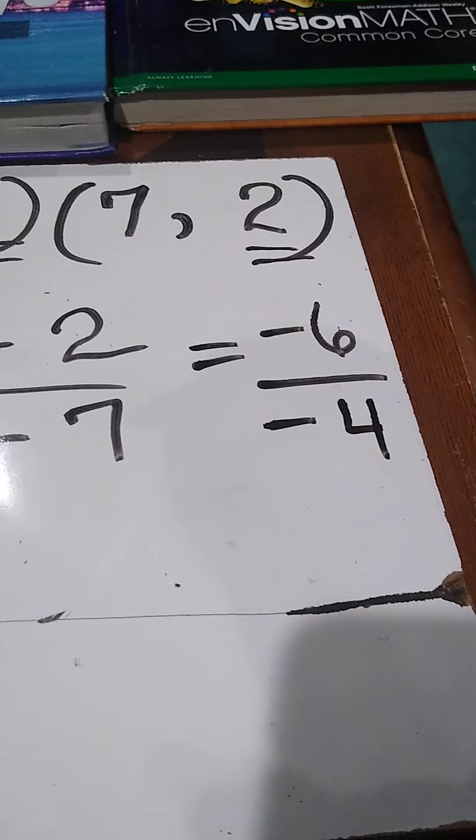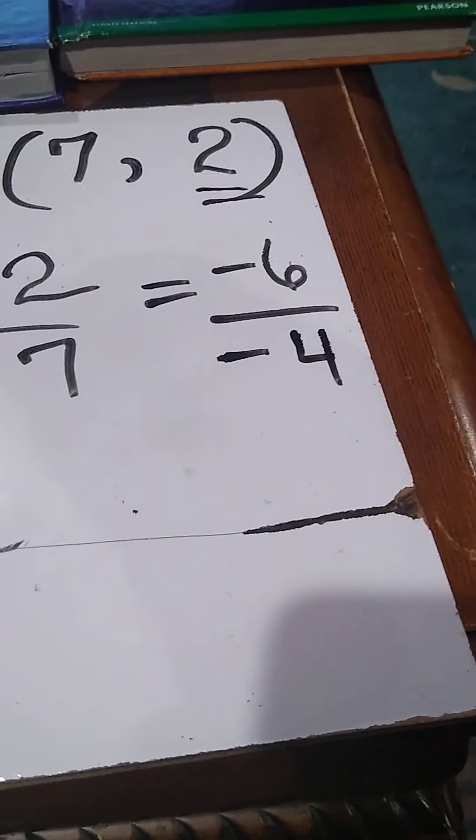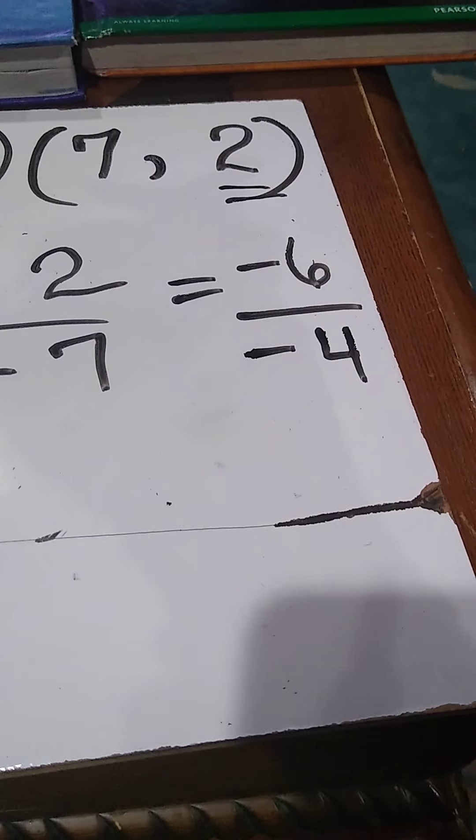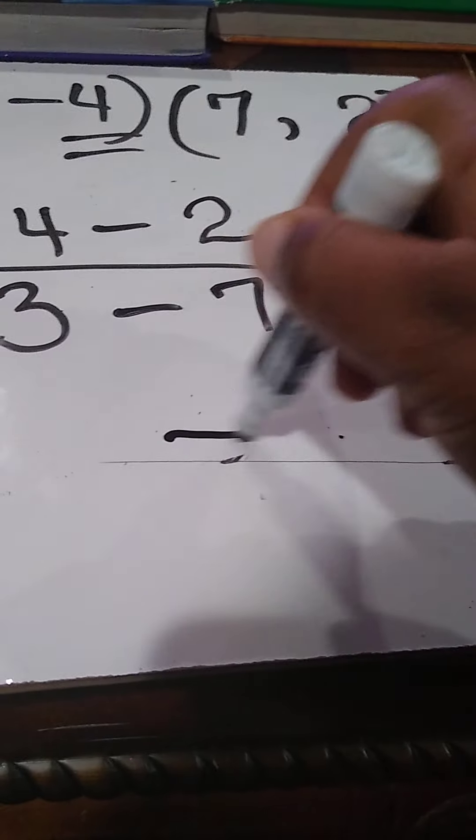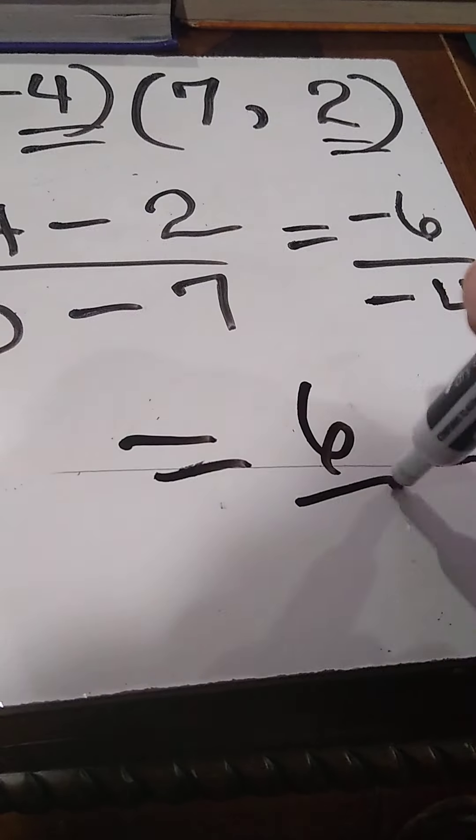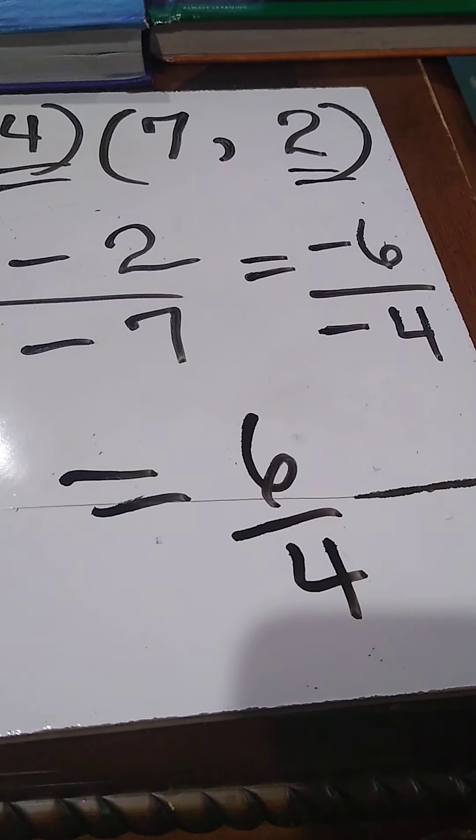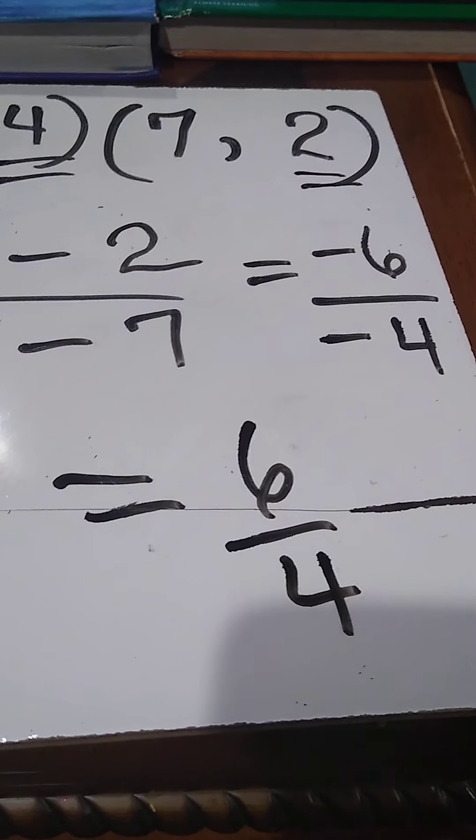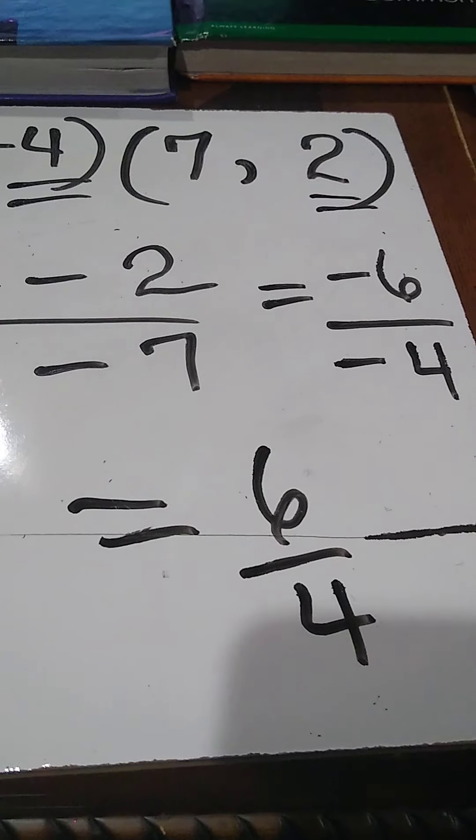Now notice I have negative divided by negative. When that happens, we change it to positive. So my answer is 6/4. Remember, it's a slope, so you cannot rename this as a mixed number. It has to stay in ratio form - y over x - even though it's an improper fraction.